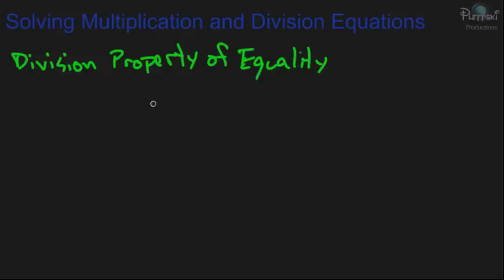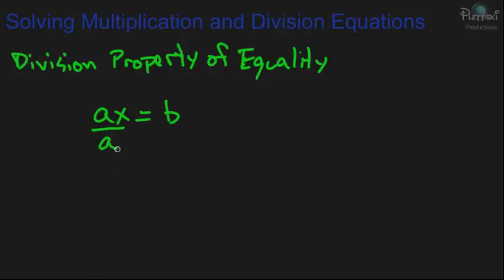What does that mean? Well, if you have an equation and you have a number on one side — let's say a — and on the other side let's say it's a times x, so a times x equals b. The division property of equality says that if you divide one side of the equation by a number — let's say we divide it by a — and you divide the other side by the same number, you're going to retain that equality. Each side is going to stay equal, as long as you divide both sides by the same value.